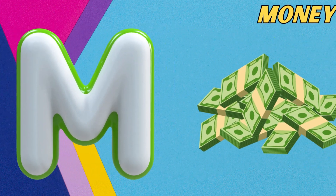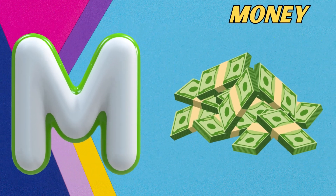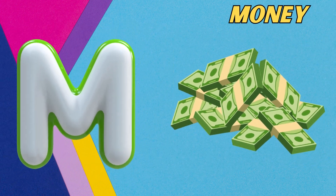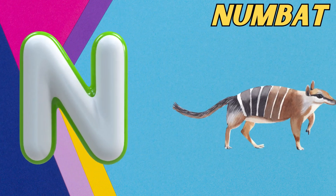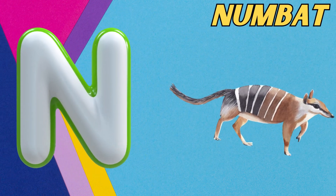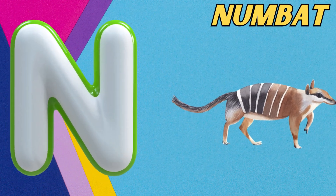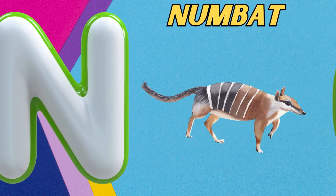M is for money, m-m-money. N is for numbat, n-n-n-numbat.